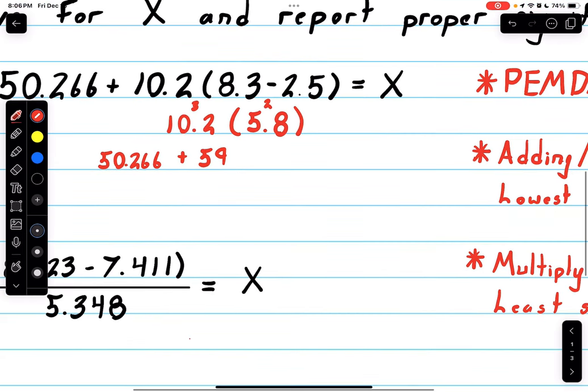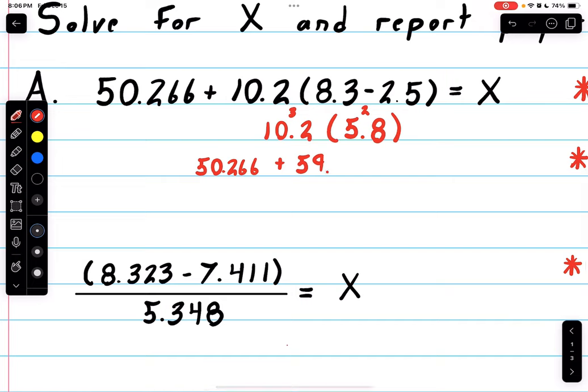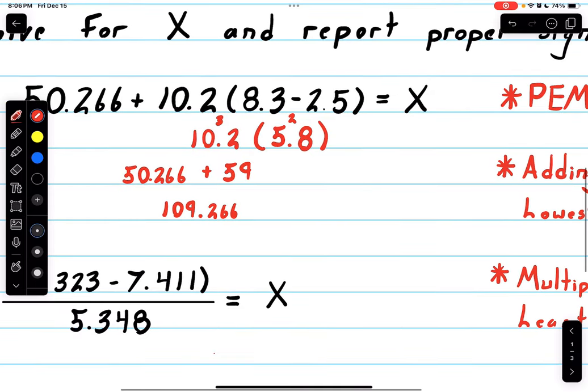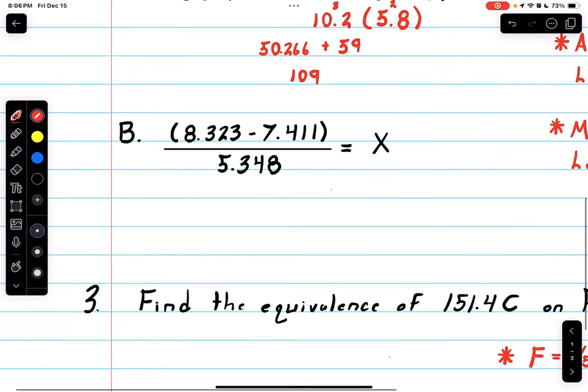Remember with adding/subtracting you want to go with the least or lowest amount of decimal places, and in this case it was a whole number. So 59 + 50.266 = 109.266. But we wanted the least amount of decimal places, and this one has no decimal places, so we just keep it as 109 because that's the lowest decimal place, since 59 was the lowest.